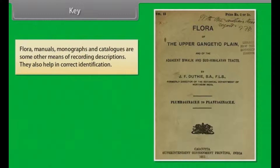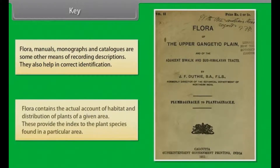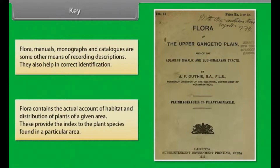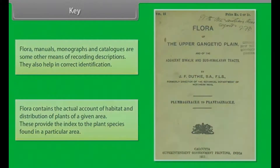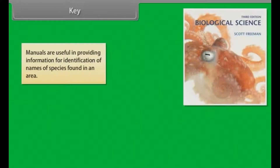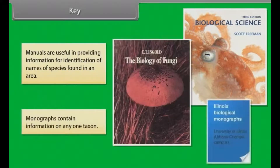Flora, manuals, monographs and catalogues are other means of recording descriptions and help in correct identification. Flora contains the actual account of habitat and distribution of plants of a given area, providing an index to the plant species found in a particular area. Manuals are useful in providing information for identification of names of species found in an area. Monographs contain information on any one taxon.